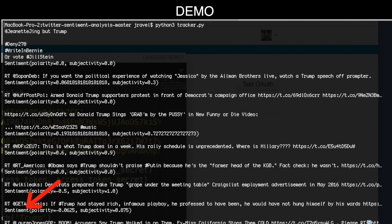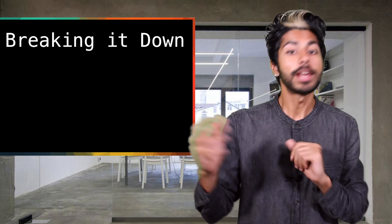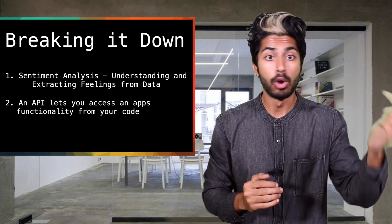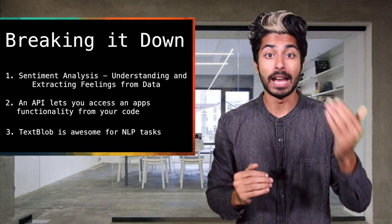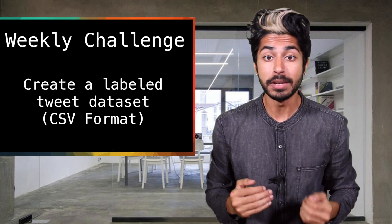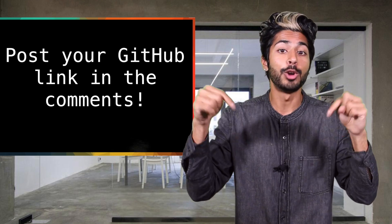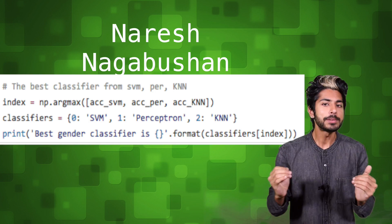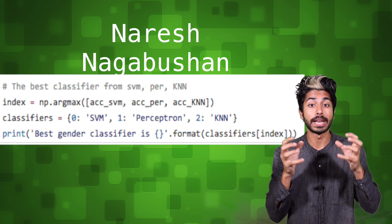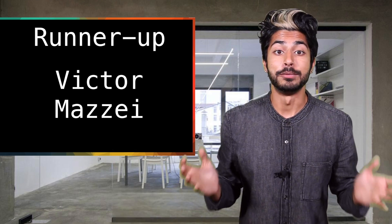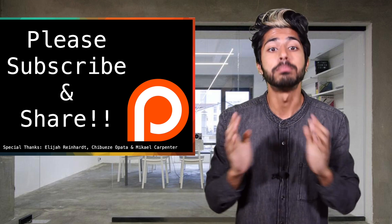We can see each tweet related to Trump as well as its sentiment analysis. Polarity measures how positive or negative some text is, and subjectivity measures how much of an opinion it is versus how factual. So to summarize: sentiment analysis is the process of extracting and understanding human feelings from data; an API lets you access a server's internal functionality like Twitter right from your app; and the TextBlob Python library lets you perform sentiment analysis in just a few lines of code. The challenge for this week is to extend this code to create a labeled CSV file with clean tweets of whatever topic is selected — details are in the code readme, post your GitHub link in the comments. The winner for the gender classification challenge from the last episode is Naresh Nagubashan; I especially liked how he created a dictionary to store the result from each of the three classifiers, then used the argmax function to print out the one with the best result. The runner-up is Victor Matze — very clean code. Check out the links in the description and please subscribe for more programming videos.